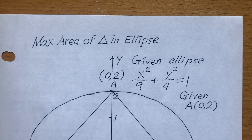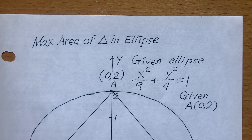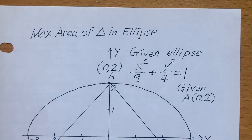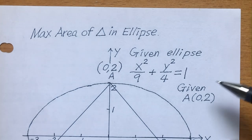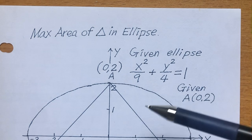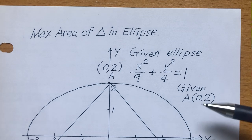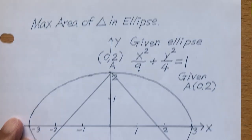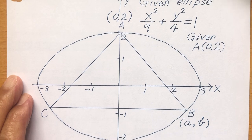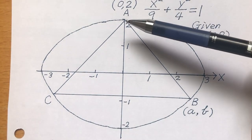This is a problem of finding maximum area of a triangle in an ellipse. The ellipse is given here, and a point A is given at (0,2). This is the diagram. The ellipse is given, point A is here.